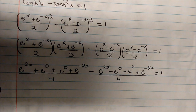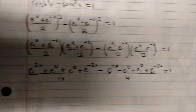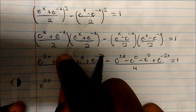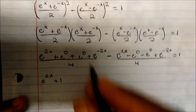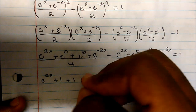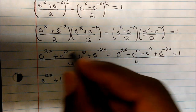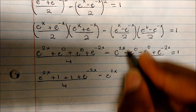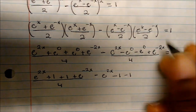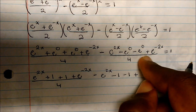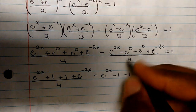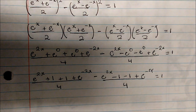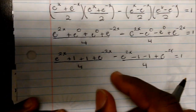This is equal to 1. We have e to the 2x, and since any number to the 0th power is just 1, we have plus 1 plus 1 plus e to the negative 2x, all over 4. We subtract from that e to the 2x, minus 1, minus 1, plus e to the negative 2x, all over 4. Since our denominator is the same, we can combine everything.